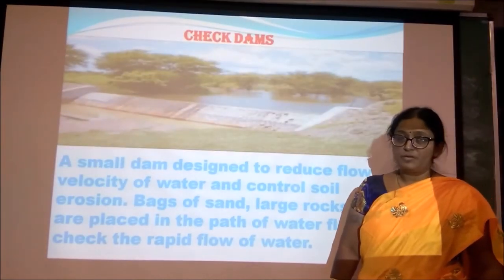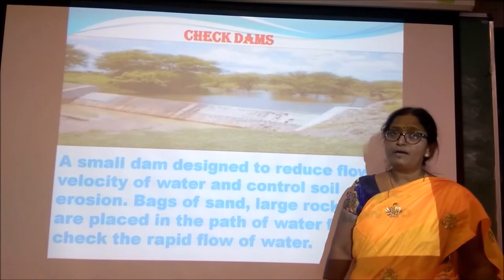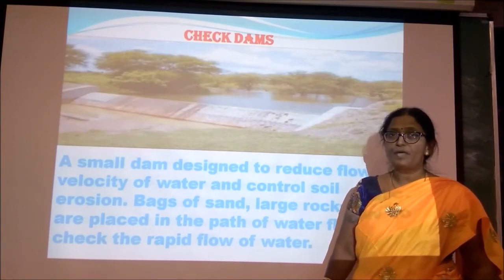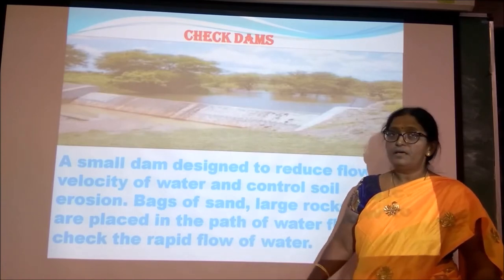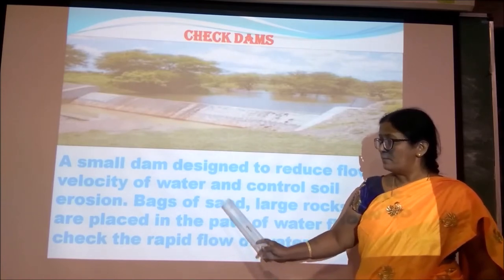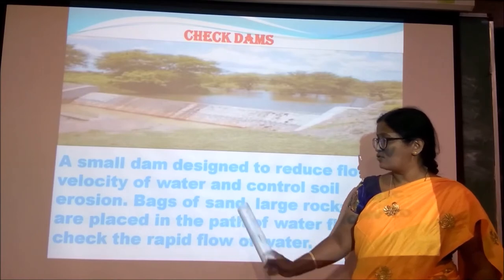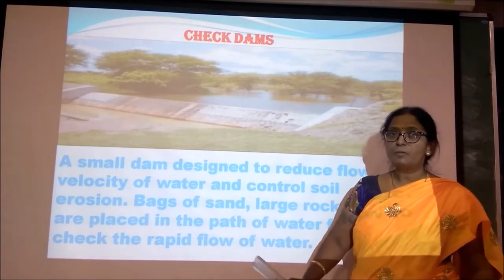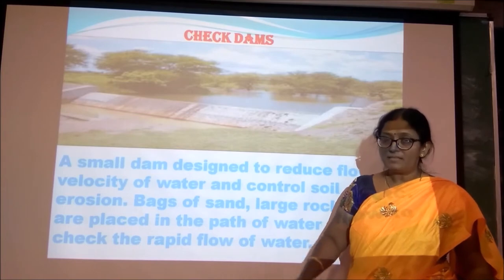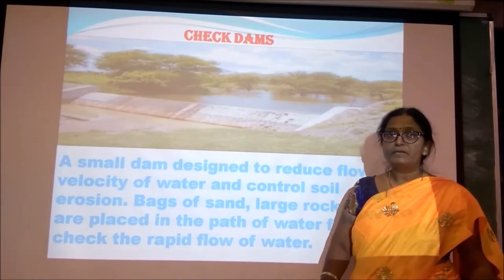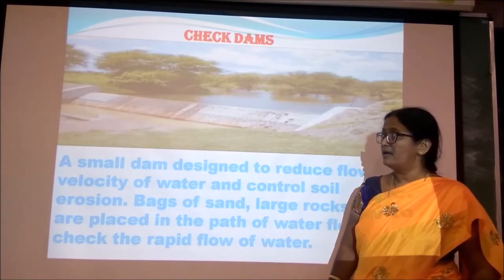Check dams. It is a small dam designed to reduce the flow velocity of water. That is done by using bags of sand and large rocks. These are placed in the path of the flow of water to prevent soil erosion.